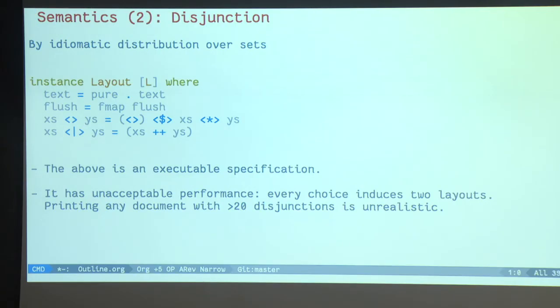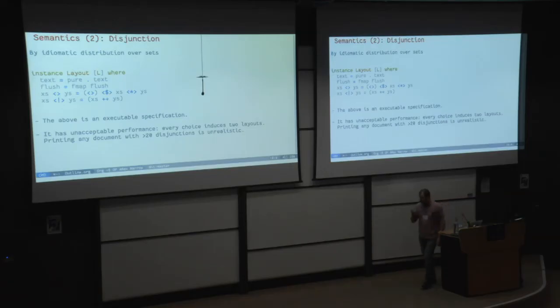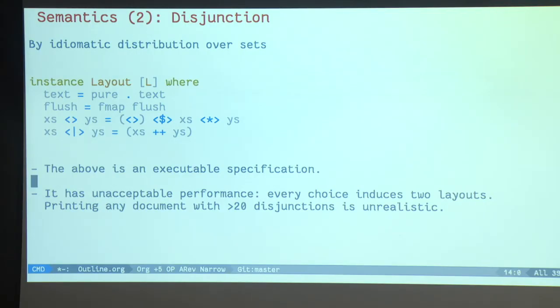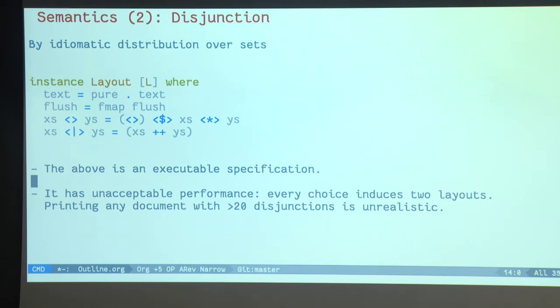Now this junction, we can implement that by doing idiomatic distribution of our sets. So this junction is represented by a set of possible layouts and we do combinatorial search. So that's the beginning and it works, except that it's totally unacceptable performance-wise, because every choice introduces two layouts. And if you have 20 disjunctions, then you have 2 to the power of 20 choices, and this is never going to finish. So how do we turn this specification, essentially, into a usable pretty printing library?